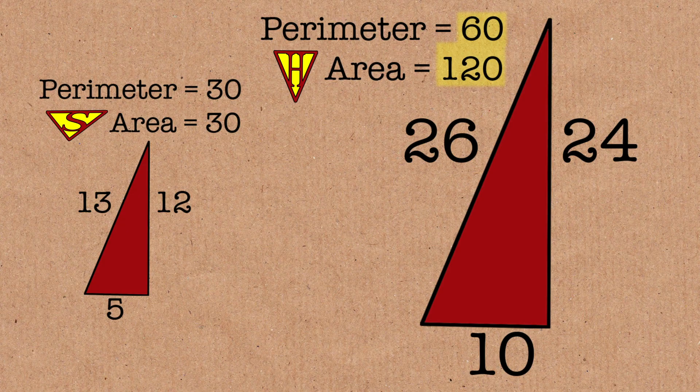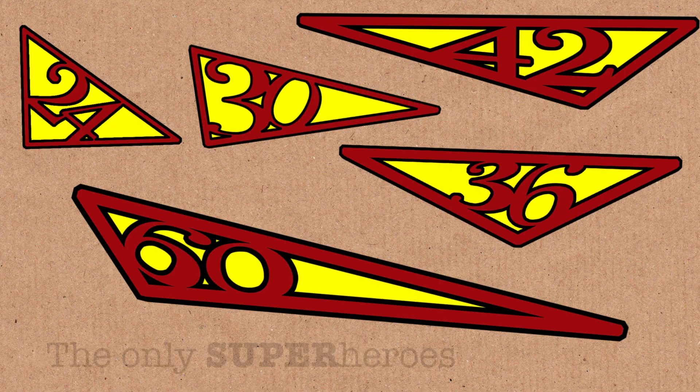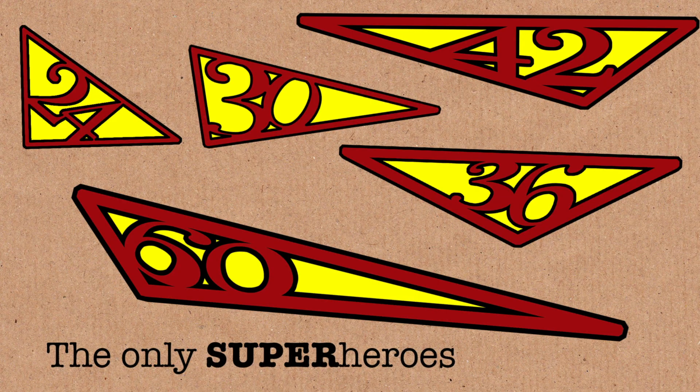So when you double the perimeter, area is multiplied by four. So even including scaled up versions of triangles, this is the five, the only five we can find.